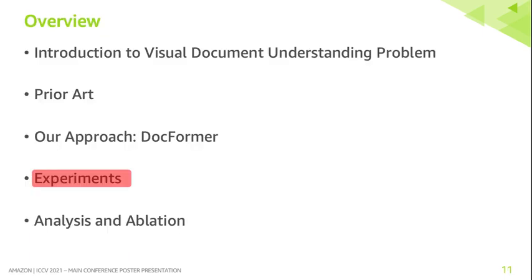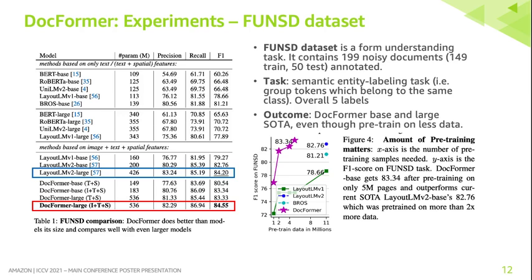Let's have a look at our experiments. We first look at Docformer's performance on FunSD, a form dataset. We can see that both Docformer base and large models beat the previous state-of-the-art model LayoutLMv2. On the right plot, we show that it does this by pre-training on only 5 million documents versus 11 million used by prior art, giving an indication that our approach is data efficient.